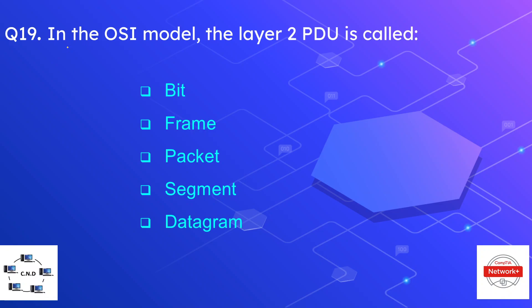Question number nineteen is: in the OSI model, the layer two PDU is called — bit, frame, packet, segment, or datagram? The correct answer is frame. Layer two is also known as the data link layer.